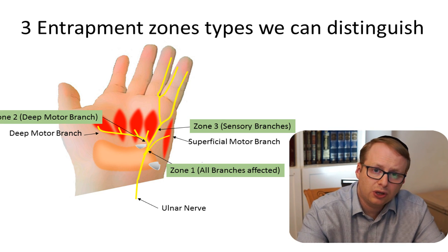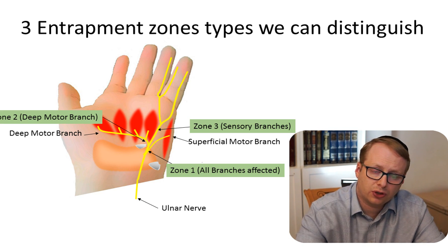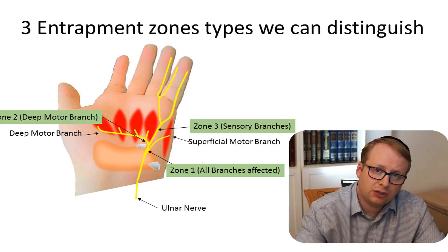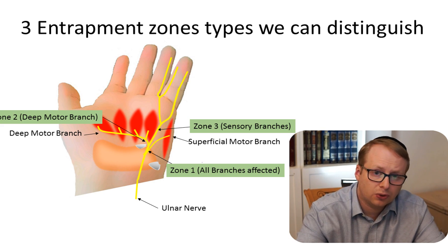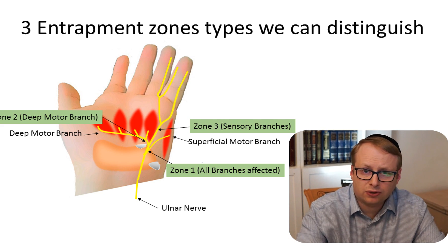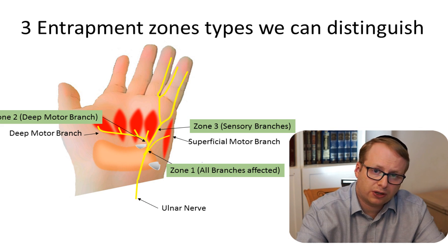If it's a Zone 2 issue, then that's just around the point of the hook of hamate and there only the deep branch is affected and we'll only see changes in the IDIO muscle. And of course, Zone 3 is the rarest of the lot where only the sensory branch is affected.